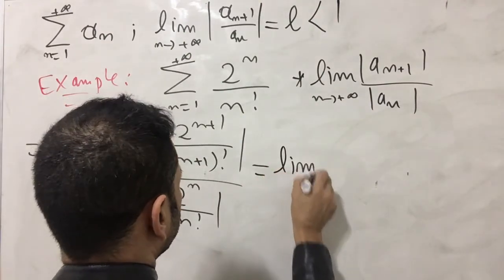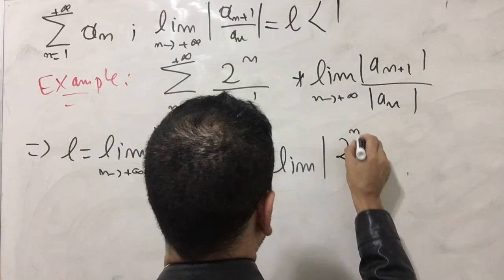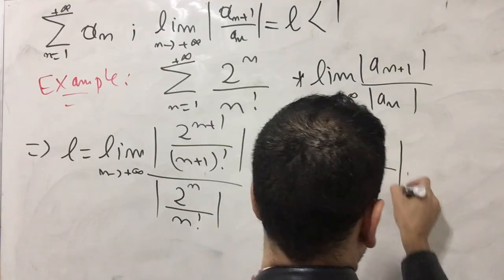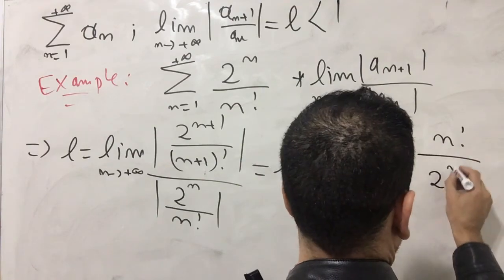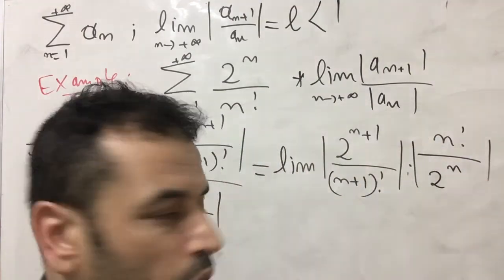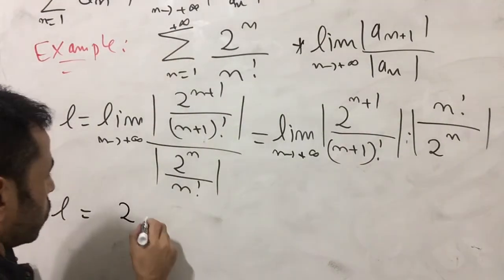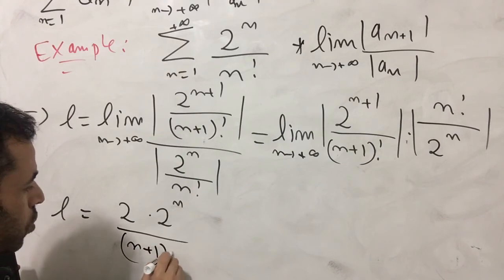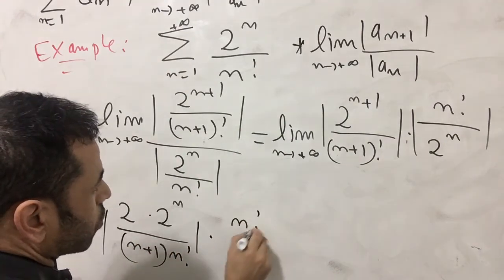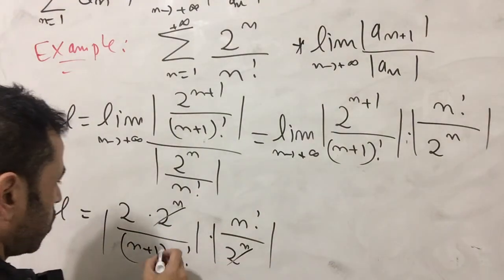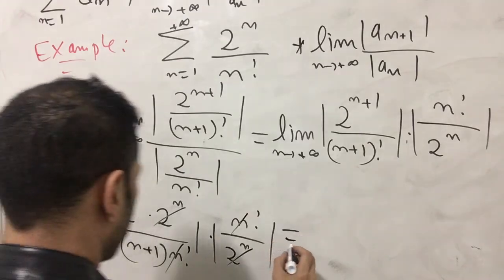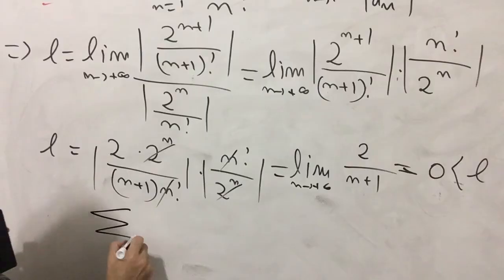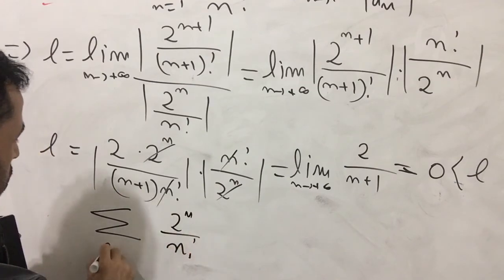This equals the limit of |2^{n+1} / (n+1)!| multiplied by |n! / 2^n|. Simplifying, the 2^n cancels with 2^n and the n! cancels with n!, leaving the limit of 2 / (n+1) as n goes to infinity. This gives us L = 0. Therefore, the series Σ(2^n / n!) as n goes from 1 to infinity is convergent.